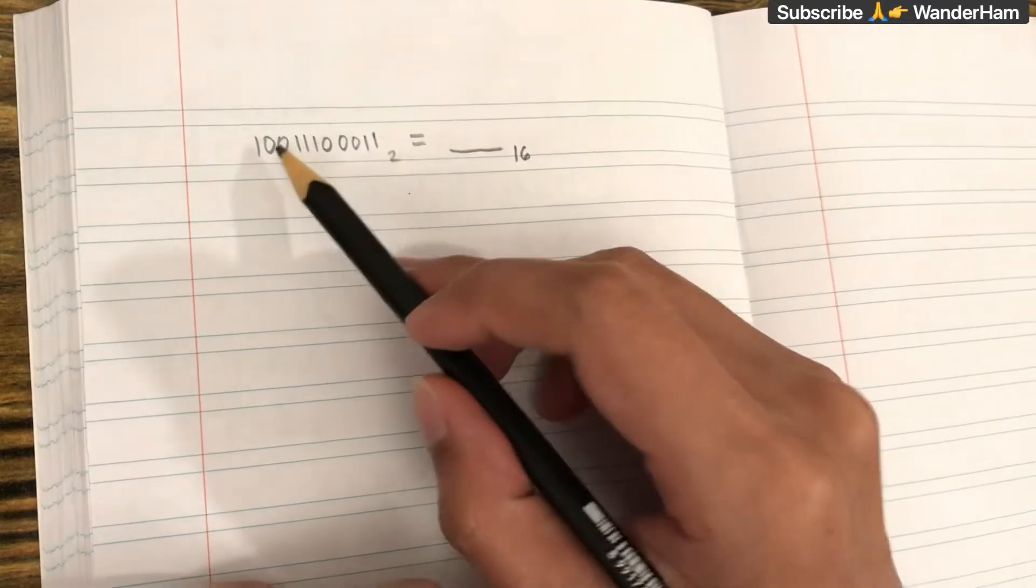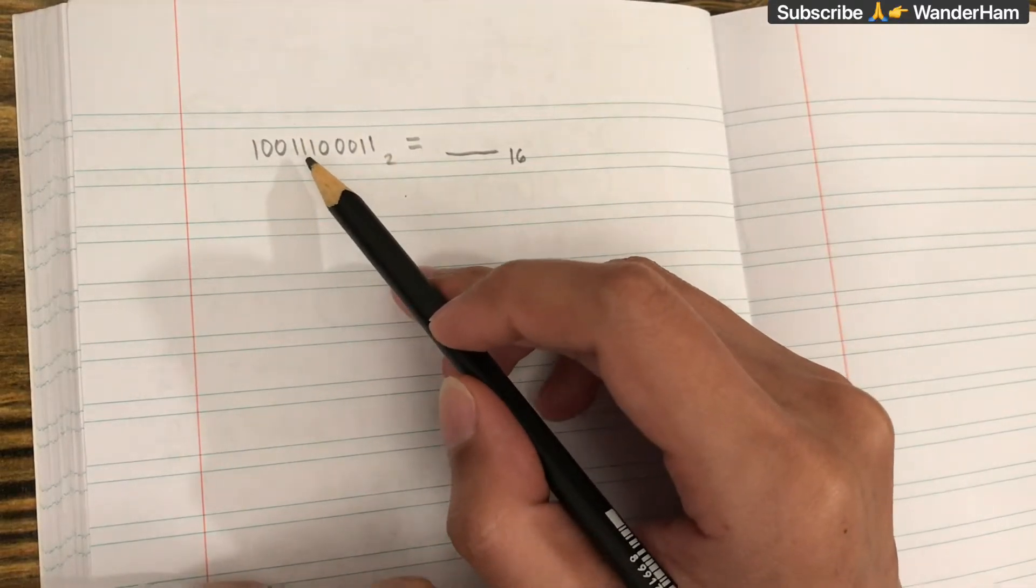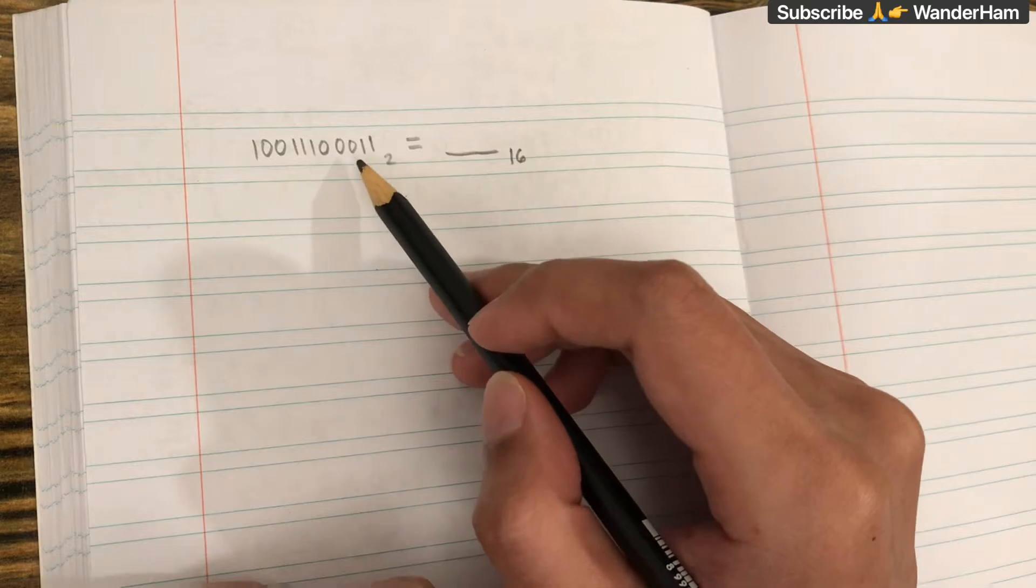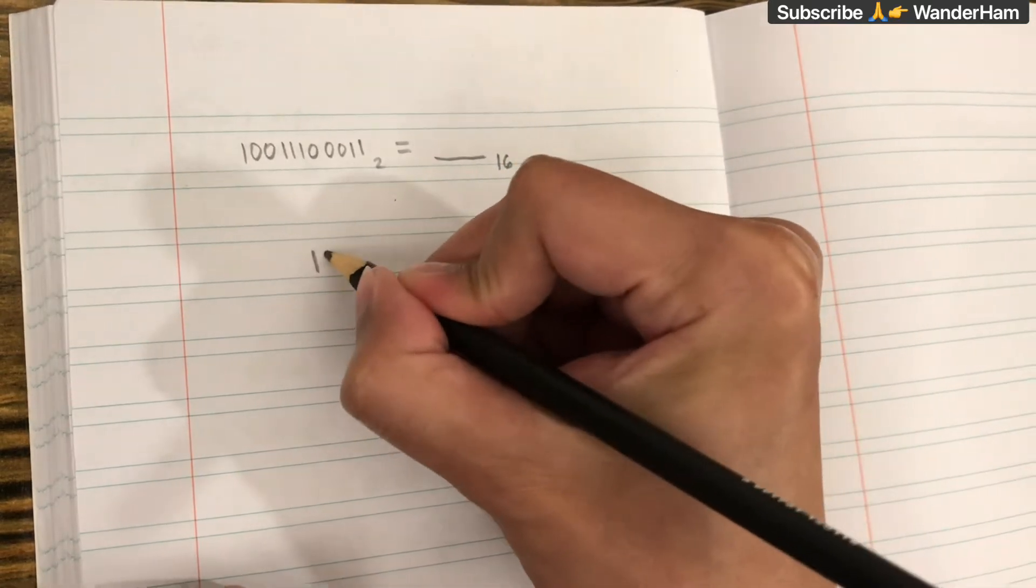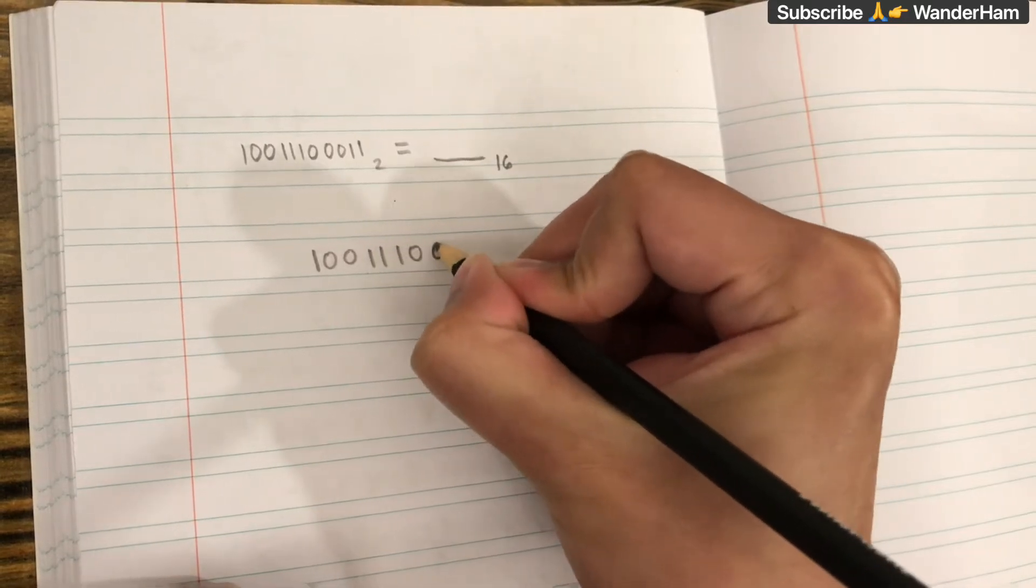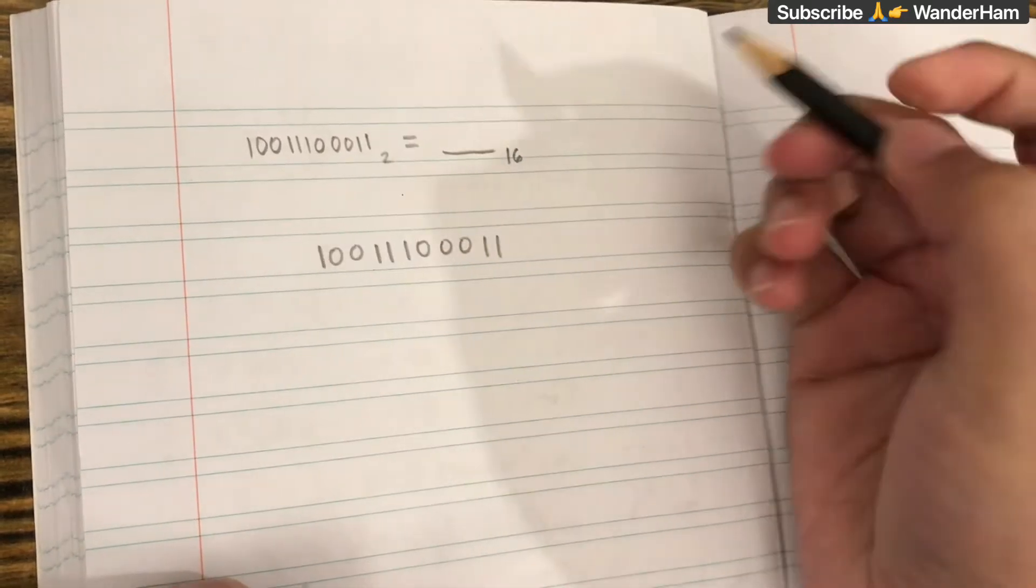How do we convert the binary number 1001110011 to hexadecimal? So first, we need to group the numbers into 4, starting from the right to the left.